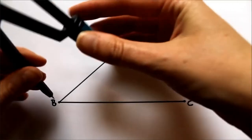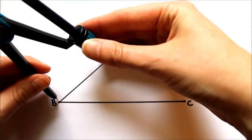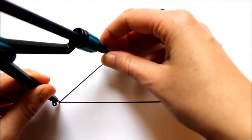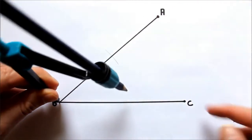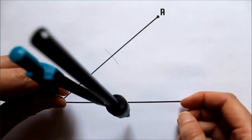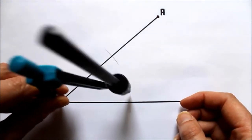The first thing we need to do is place the compass on the angle's vertex B. We're going to make an arc on the line AB and the line BC. We need to make sure that we keep the same measurement for both arcs.